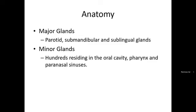The salivary glands are divided into the parotid, submandibular, and sublingual glands. These three are classified as the major salivary glands. The other ones are the minor glands — hundreds residing in the oral cavity, pharynx, and paranasal sinuses.